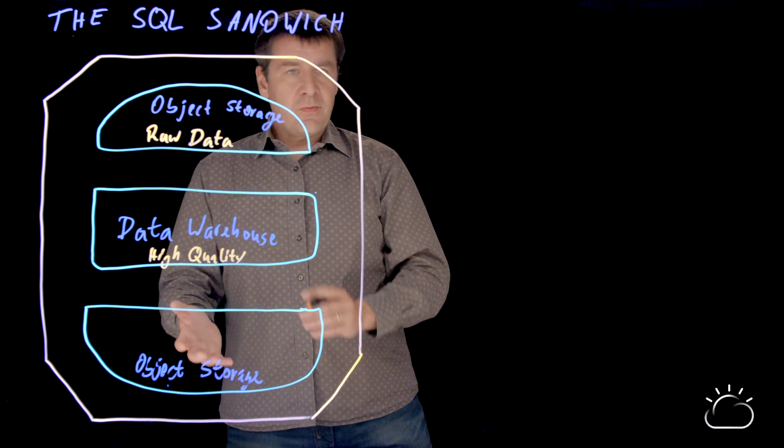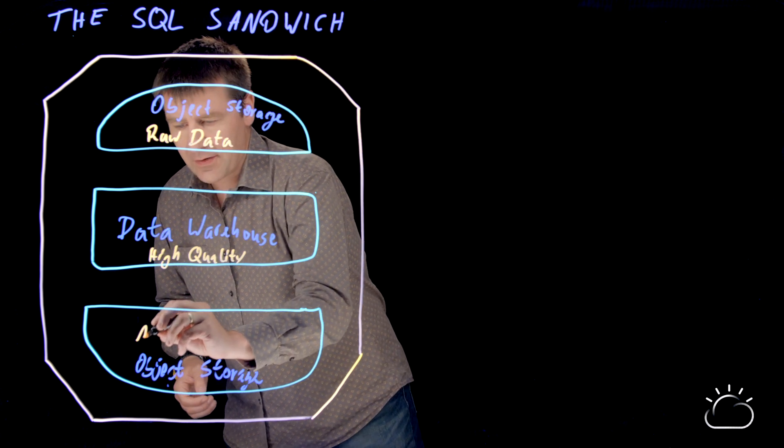And at the bottom again, the object storage. Why do we have another object storage at the bottom? Well, this is where we have our archive data.